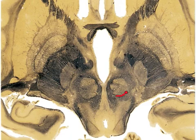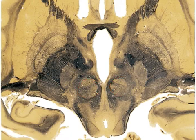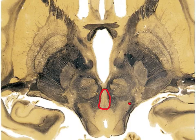Right here we have the red nucleus, and we have another one right here. And then right here we have the oculomotor nucleus. The oculomotor system is used for pupillary constriction, dilation, and keeping the object centered on the fovea.